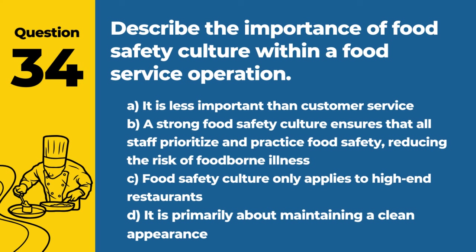Question 98. Discuss the factors that influence the effectiveness of UV light in sanitizing food contact surfaces. Answer: B. Factors include the intensity of the UV light, exposure time, and the distance from the surface. Proper application of UV light can significantly impact its ability to reduce microbial populations on surfaces.